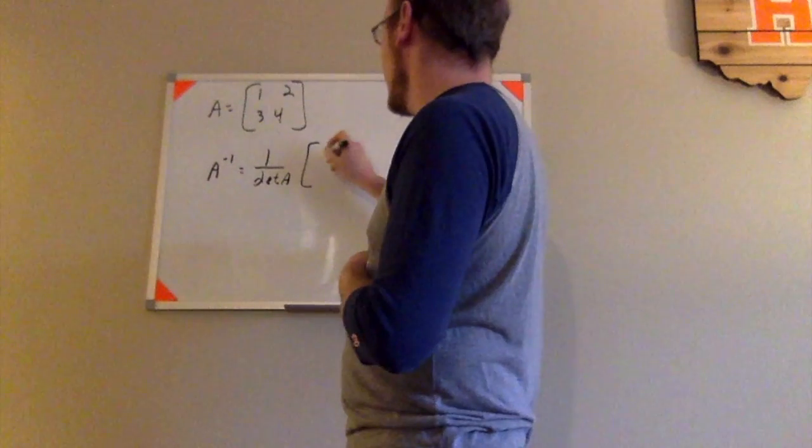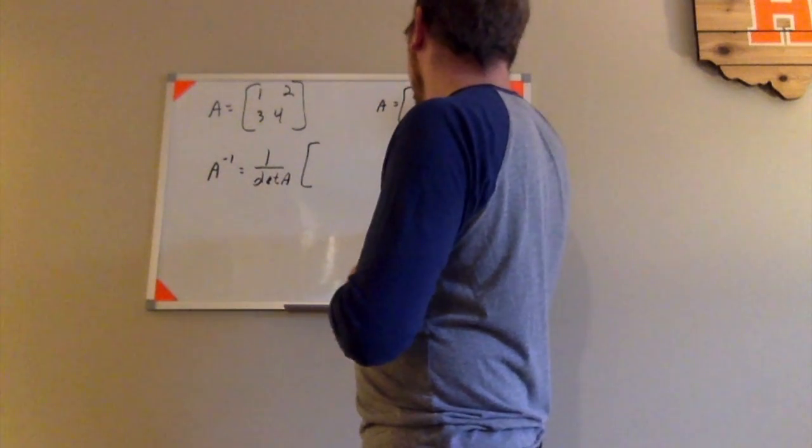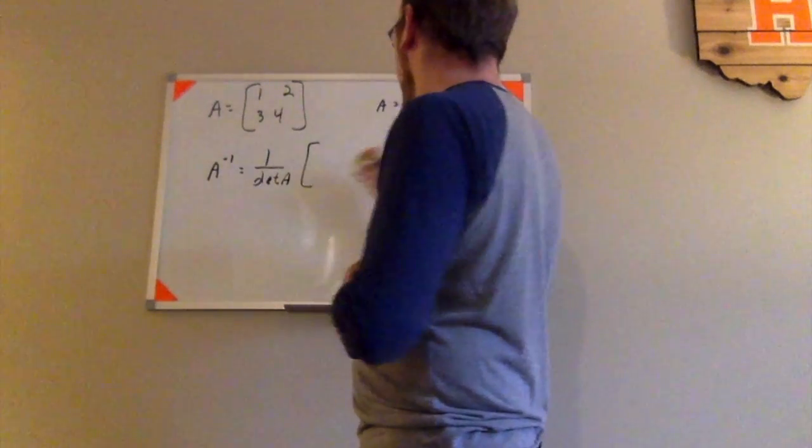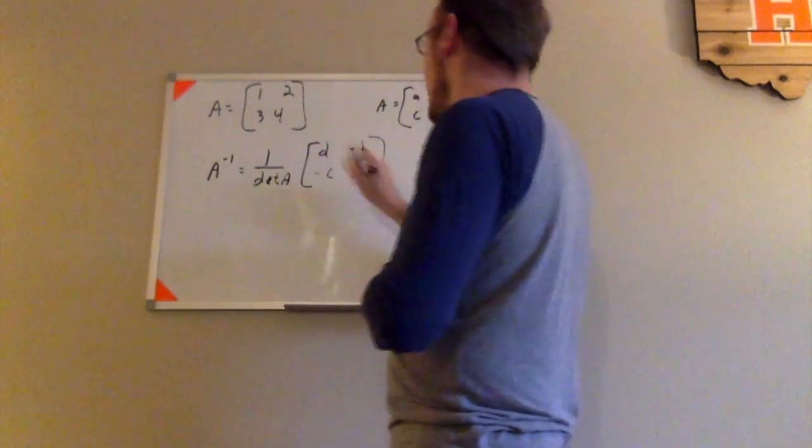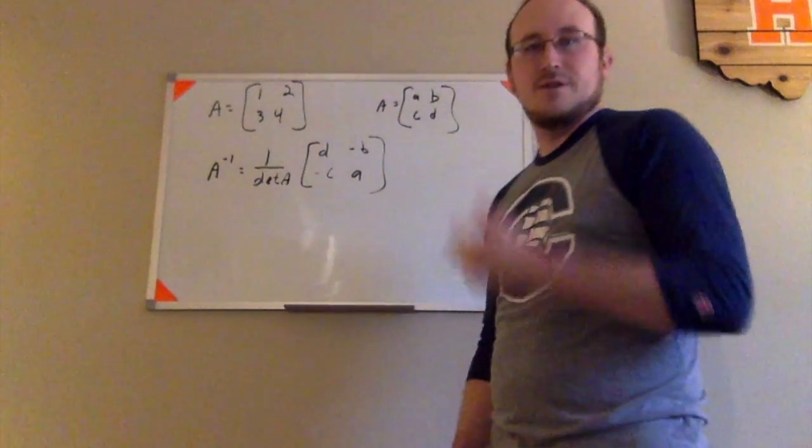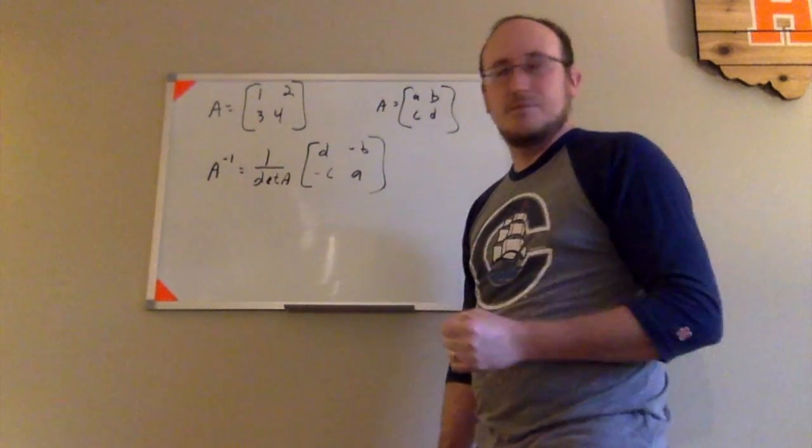we had A inverse is equal to 1 over the determinant of A times the new matrix where the entries switched. If A was originally A, B, C, D, the formula had D here, A here, and then the opposite of C and the opposite of B. I had another video where I showed you how to find the inverse of a 2x2 matrix where we saw that formula. So let's go ahead and apply that here.